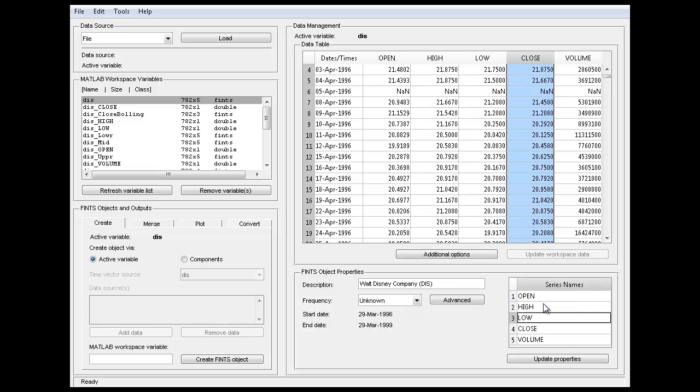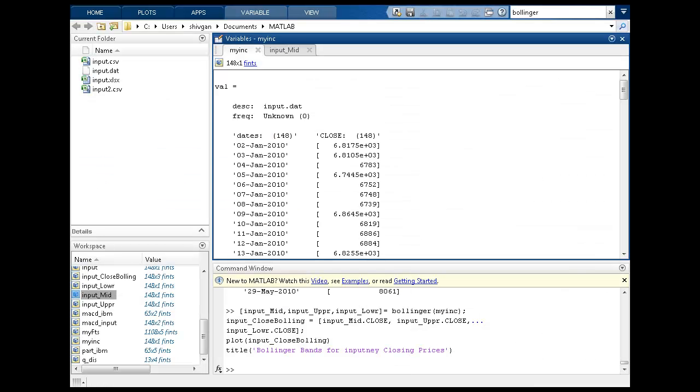So this is open, high, low, close, and volume description. And once you have this financial time series object, you can then run everything. So the only trickier part is using the code and getting those objects and creating financial time series, which is a one-time, project-based work which you can do and bring that thing into MATLAB.